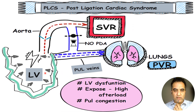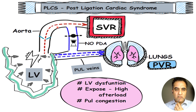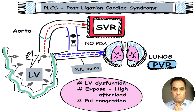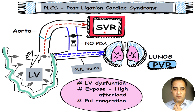Because of this dysfunction of the LV, the blood that goes out through the aorta to the systemic vessels is decreased. Hence your neonate, after a few hours of PDA ligation, goes into a low cardiac output state. More blood gets accumulated in the LA, which gets dilated, and the blood coming to the LA through the pulmonary veins gets reverted back to the pulmonary vasculature — causing pulmonary congestion and low blood flow to the systemic vasculature.